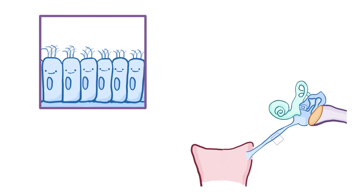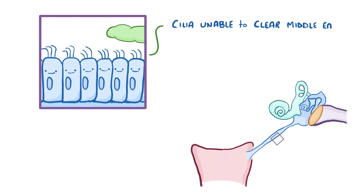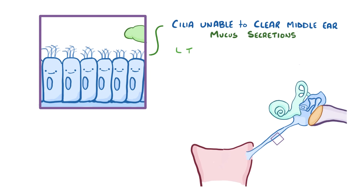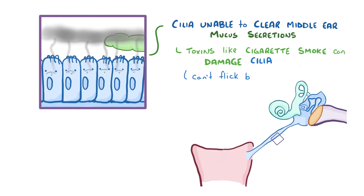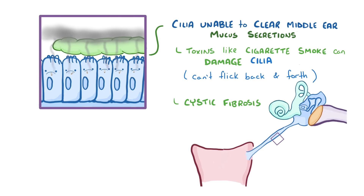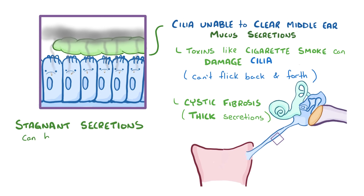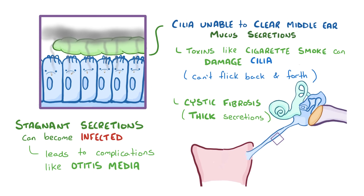Finally, the third sort of dysfunction happens when the eustachian tube and the tiny cilia within it are unable to clear out middle ear mucus secretions. Sometimes this can result from toxins like cigarette smoke, which damage the cilia so that they can't flick back and forth normally to move the mucus. The dysfunction can also be associated with systemic conditions like cystic fibrosis, which causes secretions to get really thick. Regardless of the cause, stagnant secretions can get infected, leading to more complications like otitis media, an infection of the middle ear.